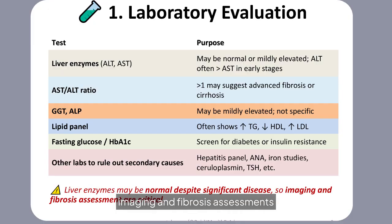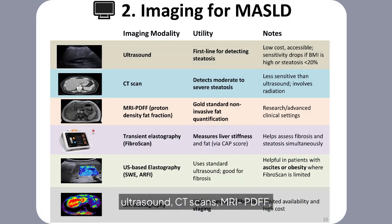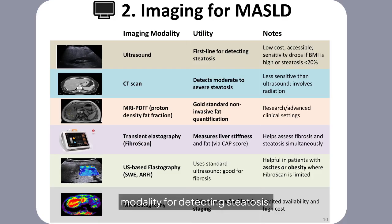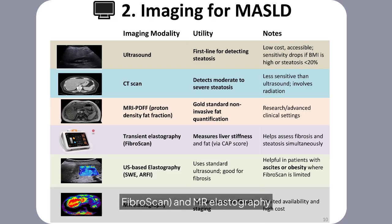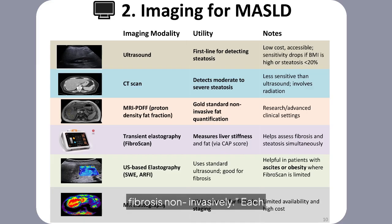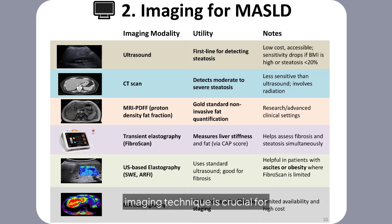Imaging for MASLD includes ultrasound, CT scans, MRI-PDFF, and elastography. Ultrasound remains the first-line imaging modality for detecting steatosis. However, newer techniques like transient elastography, FibroScan, and magnetic resonance elastography offer quantification of liver stiffness, helping assess fibrosis non-invasively. Selecting the appropriate imaging technique is crucial for accurate diagnosis and monitoring of MASLD progression.